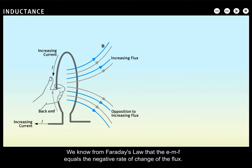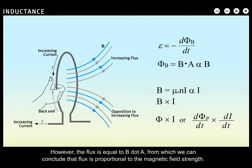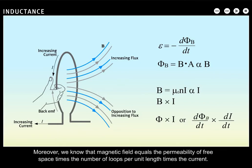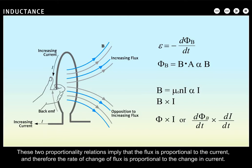We know from Faraday's Law that the EMF equals the negative rate of change of the flux. However, the flux is equal to B dot A, from which we can conclude that flux is proportional to the magnetic field strength. Moreover, we know that magnetic field equals the permeability of free space times the number of loops per unit length times the current. We can conclude from this that B is proportional to the current. These two proportionality relations imply that the flux is proportional to the current, and therefore the rate of change of flux is proportional to the change in current.